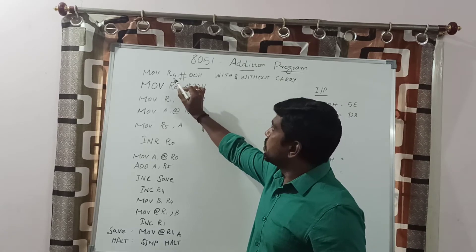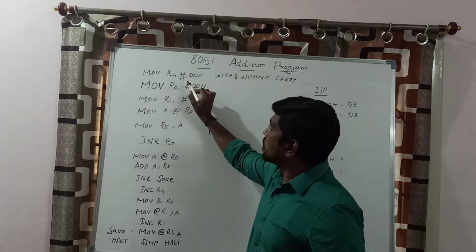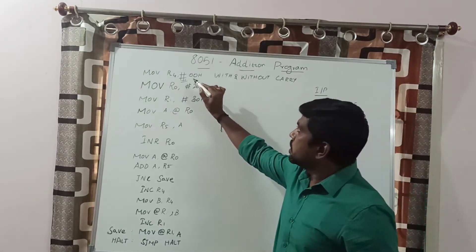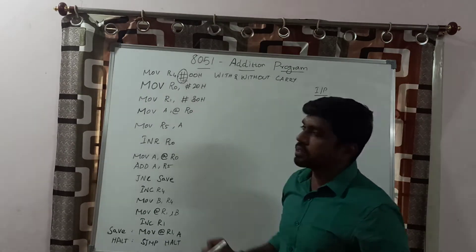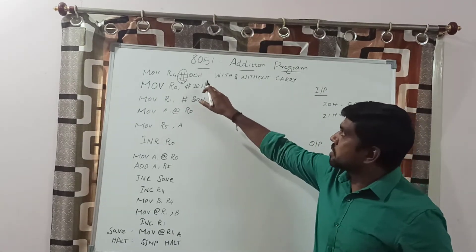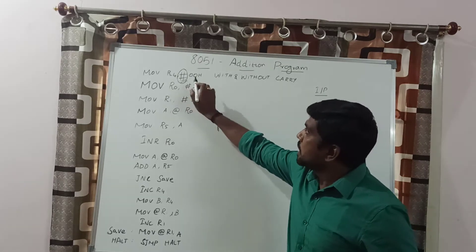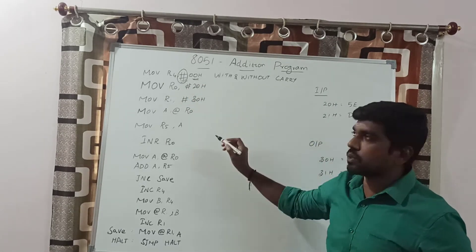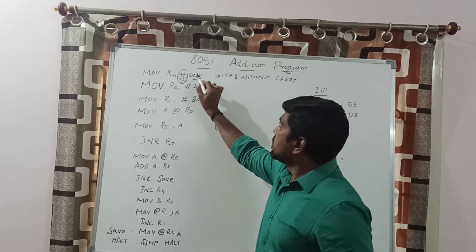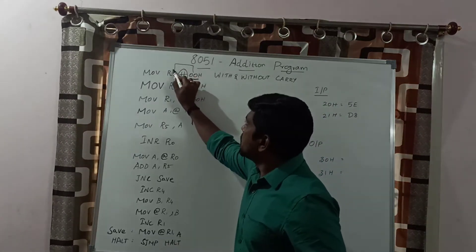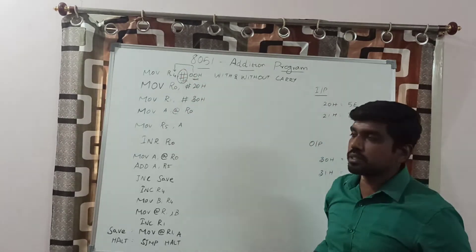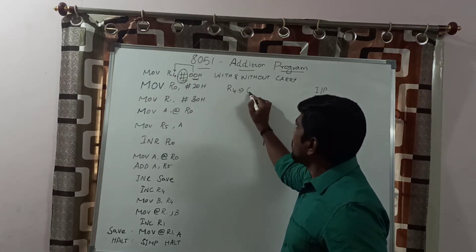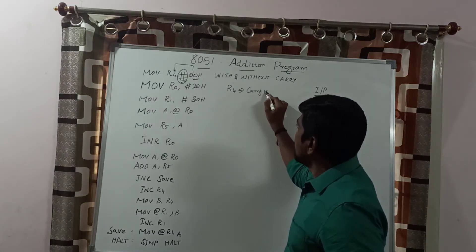The first instruction is MOV R4, #00H. The '#' symbol represents immediate data in the instruction itself. This content is considered an immediate value, not an address location. This immediate value 00H is transferred to the R4 register. The R4 register will hold the carry value. Initially, you are clearing the carry register with zero — 00H is transferred to R4.